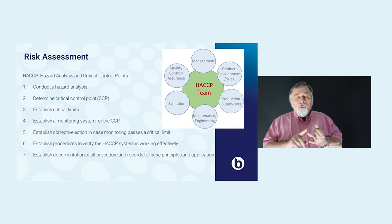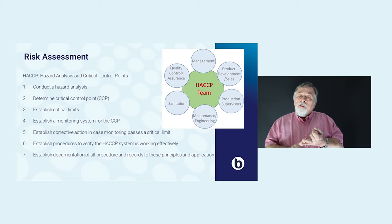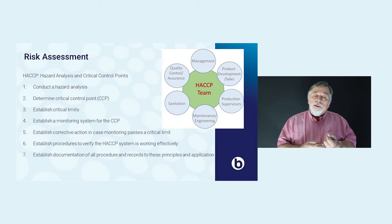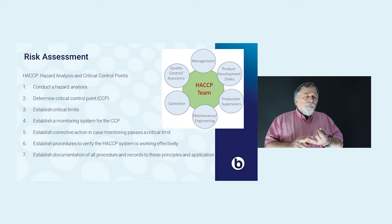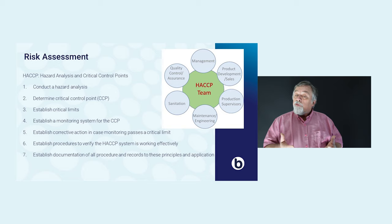Then you establish a monitoring system, and for this monitoring system you determine action and alert levels. Next, you make a list of actions to be taken when a certain level has been passed. Then you document the whole process of this HACCP system and check whether the effectivity is right. If the effectivity of this approach is not right, you have to make changes and document these again.